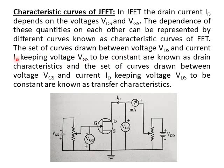The curves drawn between VDS and ID, keeping VGS constant at different values, are called drain characteristics or output characteristics. The set of curves drawn between voltage VGS and current ID, keeping VDS constant, are called transfer characteristics.